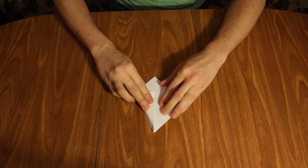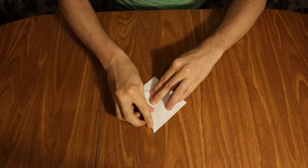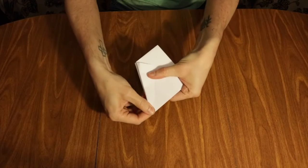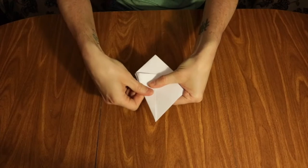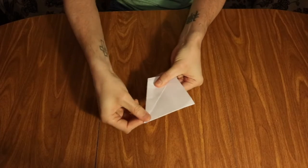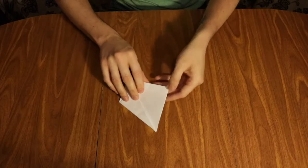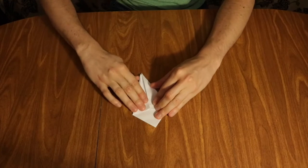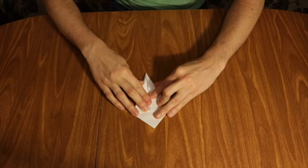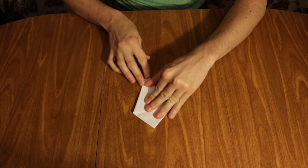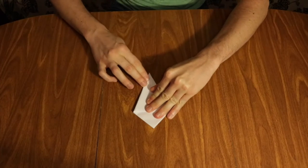Now flip it over and do the same thing on the other side. One of the nice things about making a crane is that it is very symmetrical. I'm going to fold this edge over, it's going to meet at the center crease, and do the same to the other side. So once you're done, you will be holding something that is a bit more of a kite shape rather than a square.